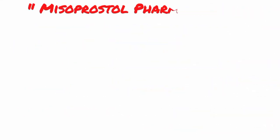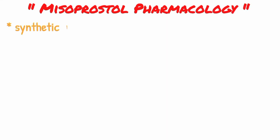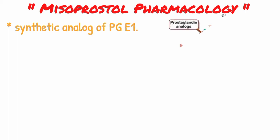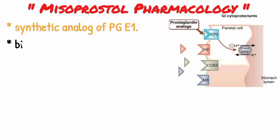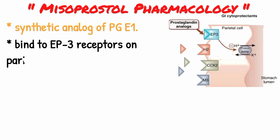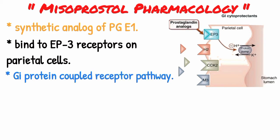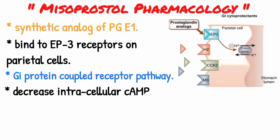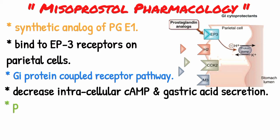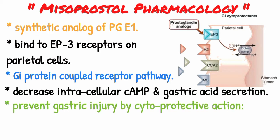Now if we talk about the pharmacology of misoprostol, which is basically a synthetic analog of prostaglandin E1 — misoprostol binds to the EP3 receptor on the parietal cell of the stomach and stimulates the Gi protein-coupled receptor pathway, thereby decreasing the intracellular cyclic AMP and gastric acid secretion.